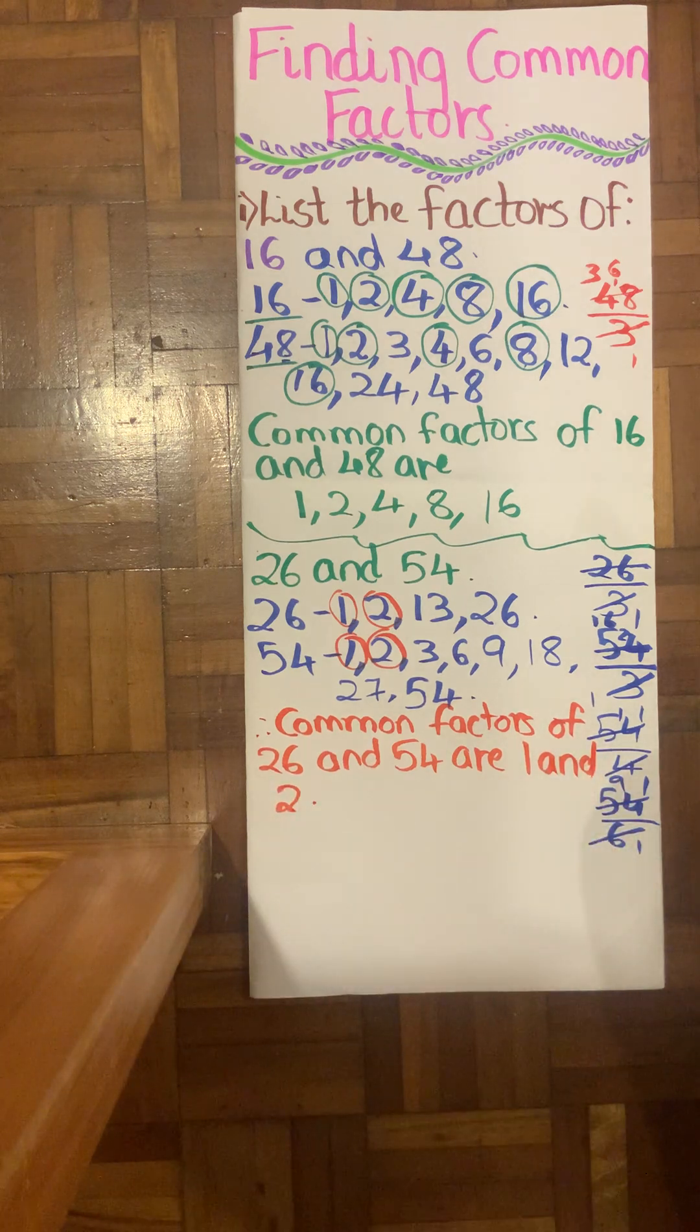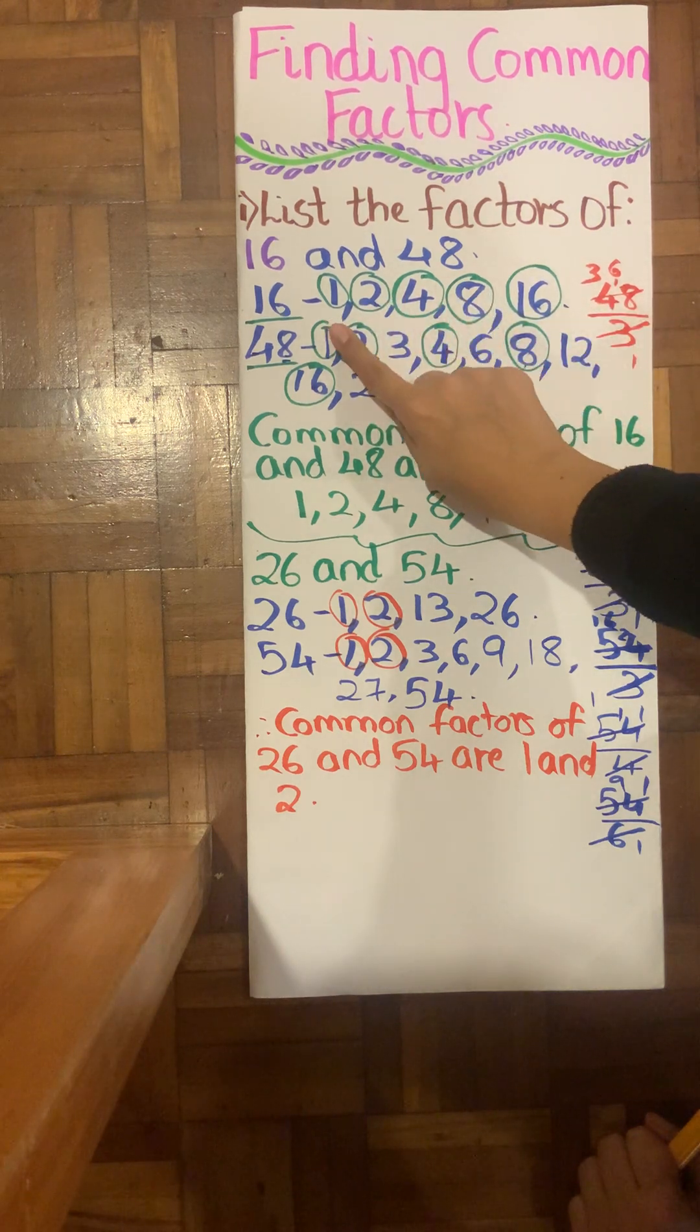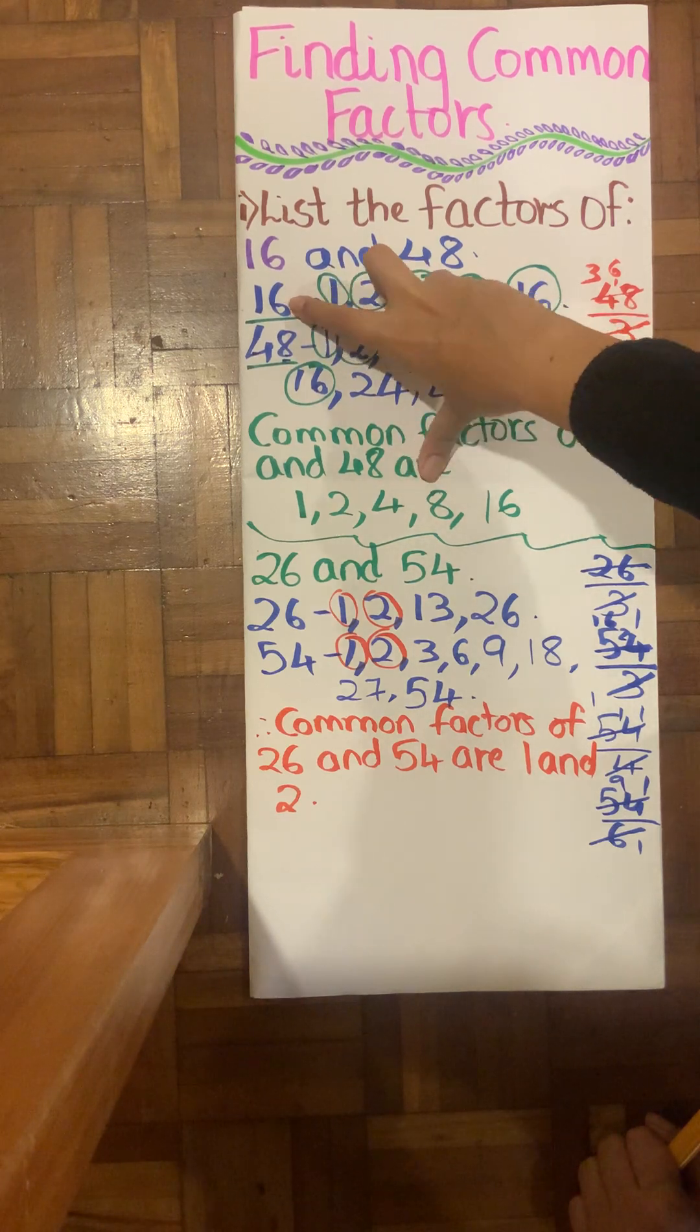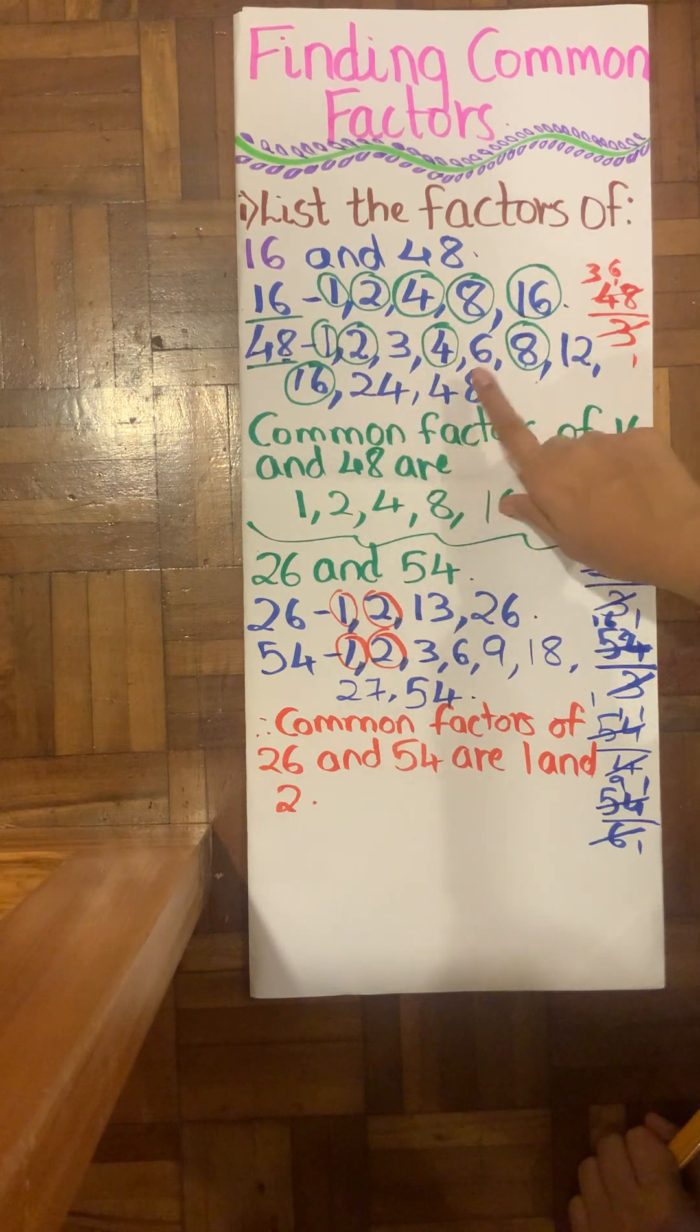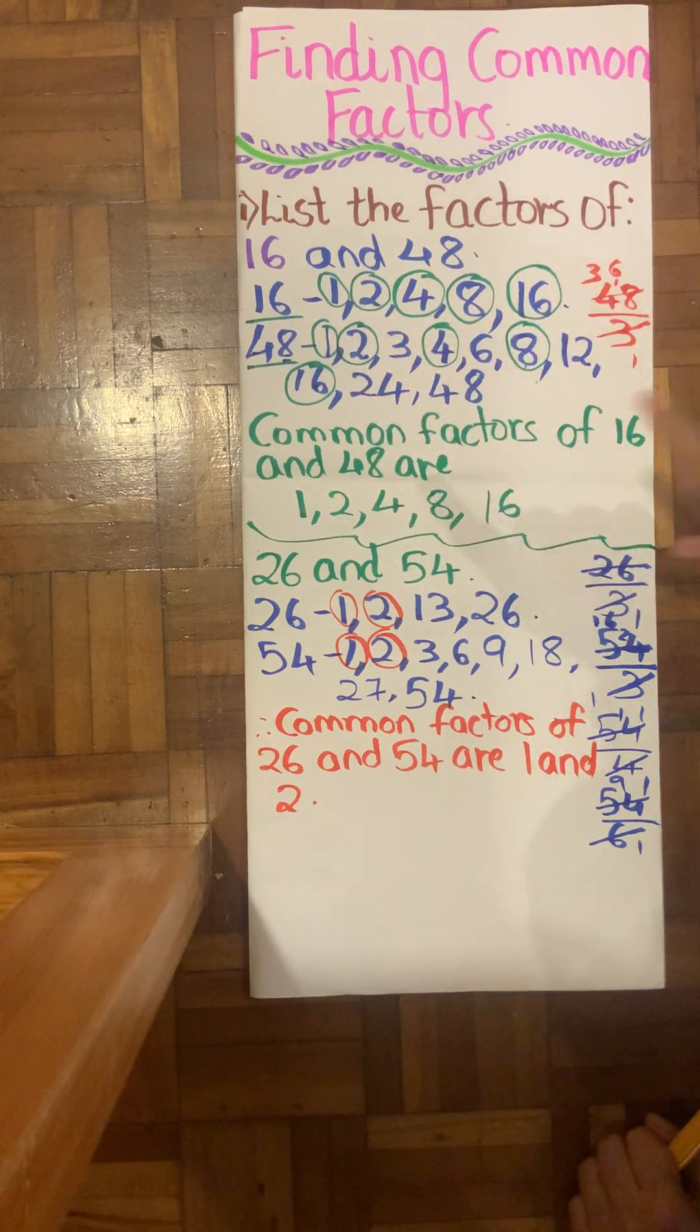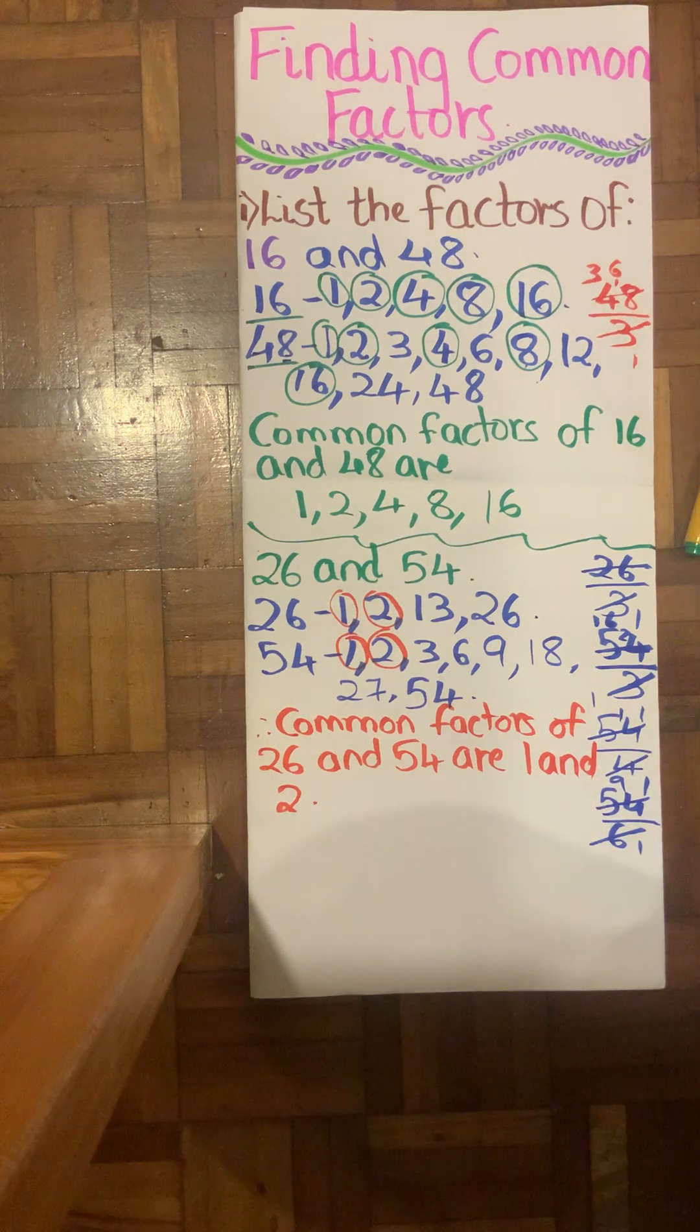I hope that helped. To reiterate again, first we find the factors of the number, that is in which table that number comes. After finding the factors for both, the numbers that are common in both is what we circle or you may underline as you like it. And finally then the numbers which outstand, that is the common numbers that are existing between both the numbers, are going to determine our common factors. Thank you.